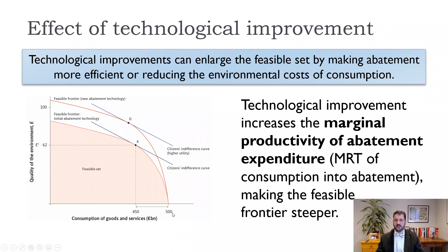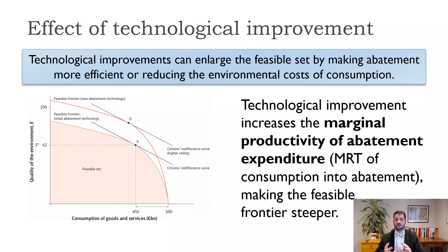In this graph, when we shift up from the old feasible frontier to the new feasible frontier, we get a whole lot more options at lower costs. Based on our indifference curves, we actually spent even more to get a much cleaner environment — but with different indifference curves, we could have spent the same or even less and still gotten a cleaner environment. We've seen a lot of these technological improvements over the last 10, 20, 30, 40 years in terms of solar panels, wind farms, and electric cars.